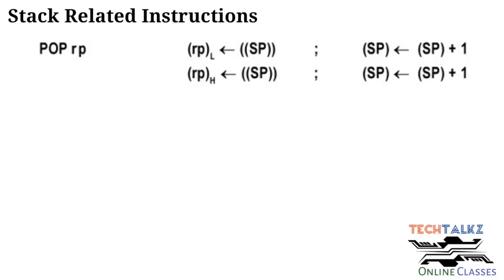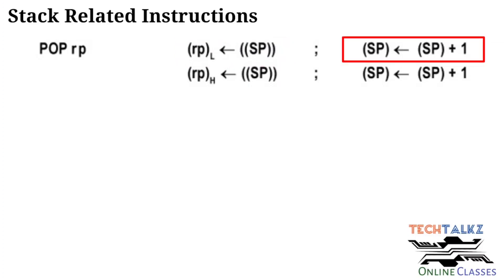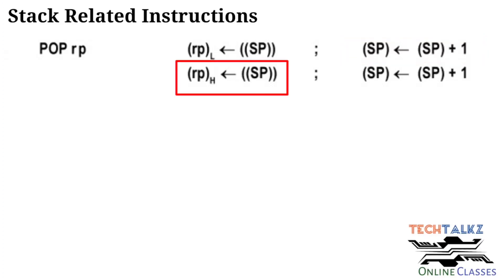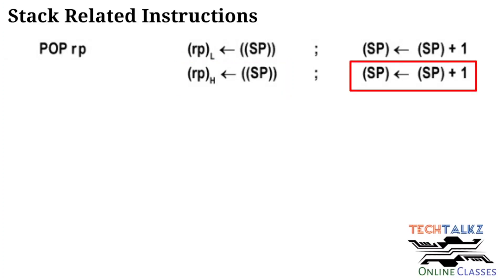For the POP instruction, register pairs BC, DE, HL, or PSW can be used. POP is opposite to PUSH. The content of memory addressed by the stack pointer is moved to the low-order register. Then the stack pointer is incremented by 1. Next, the content of memory addressed by the stack pointer is moved to the high-order register, and the stack pointer is incremented by 1 again.